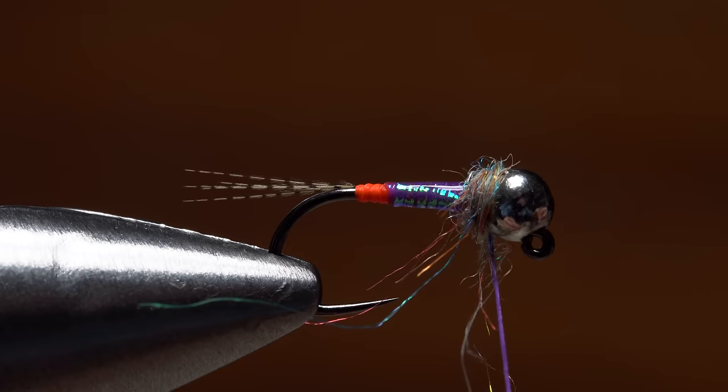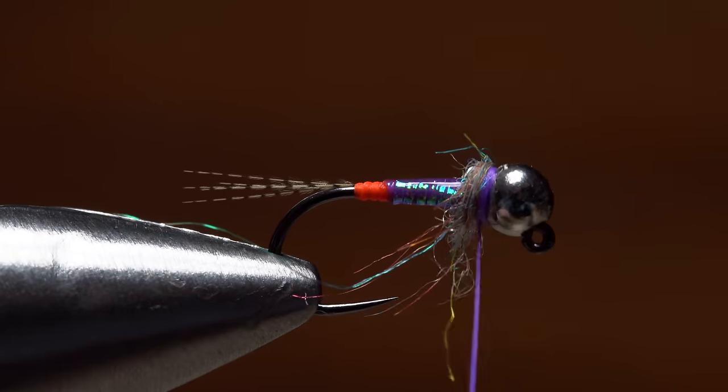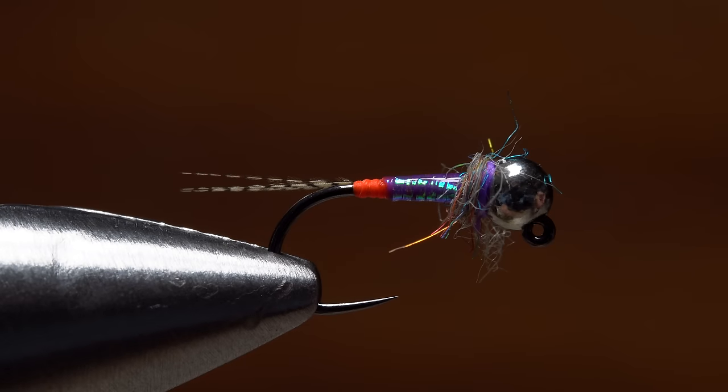Do a four or five turn whip finish with the purple thread, then use the tips of your tying scissors to snip it off close. You want a rather minimal collar here so as not to slow the fly's fast sink rate.